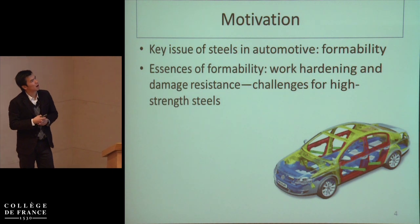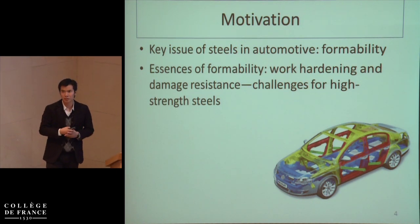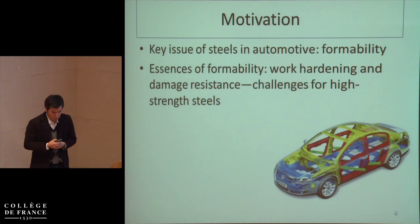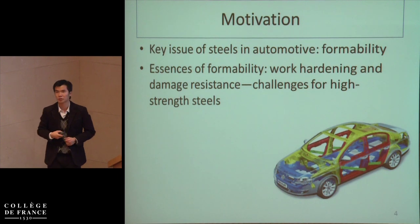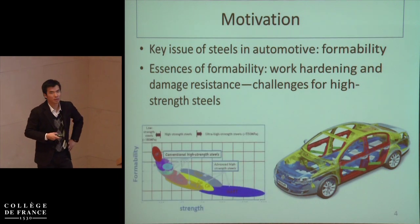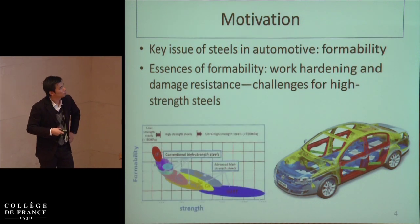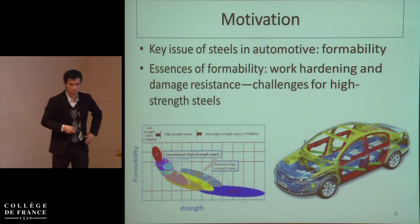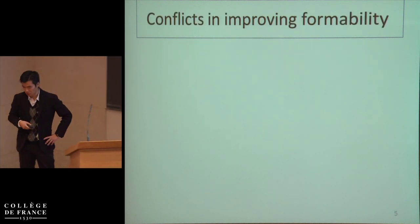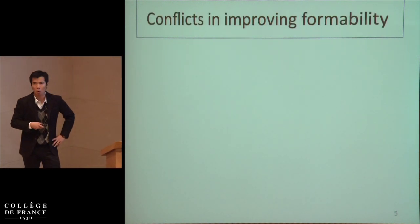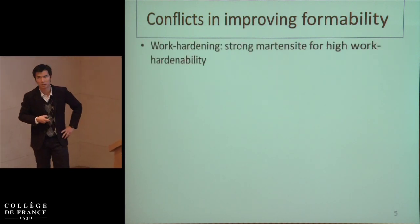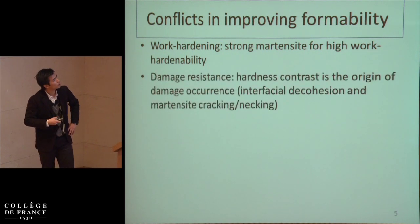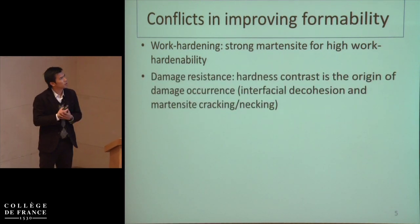The essence of formability is work hardening and damage resistance. A good combination between strength, work hardening, and damage resistance is still a big challenge for high-strength steels. Most of the work is to move the Bernaline curve in the space of strength and formability in this direction. But when we want to improve formability there are always problems — for example, if we want good work hardening, we want a strong martensite.